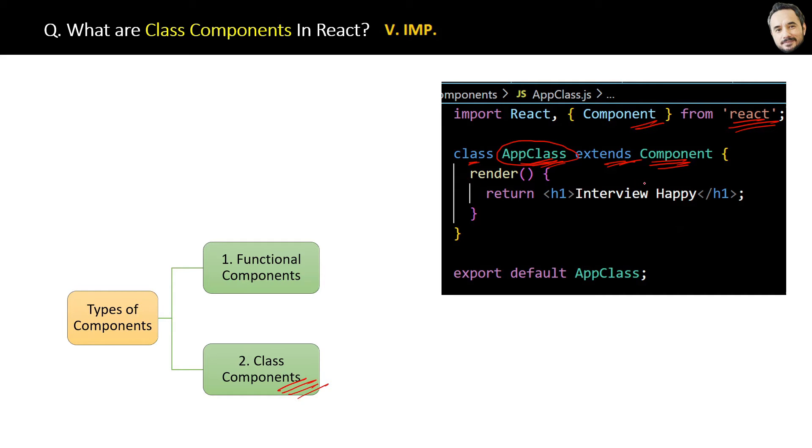Like functional components, we return the JSX from the class component also. Here, the render method in a class component is responsible for returning the JSX. Finally, we export the class component AppClass like functional components, so that it will be available for import in other classes.